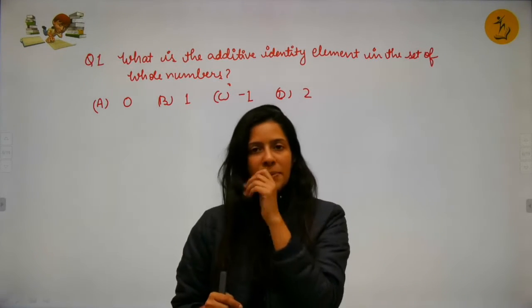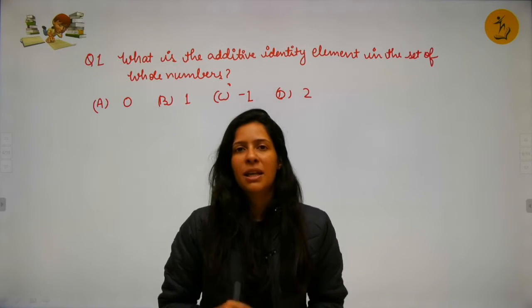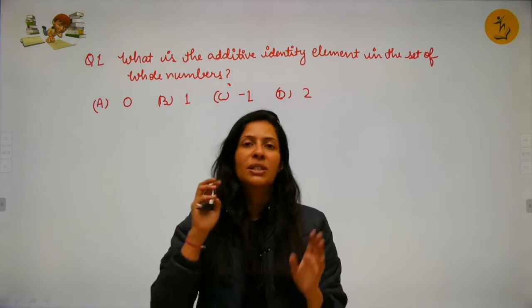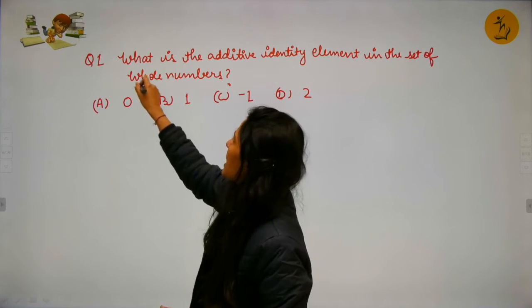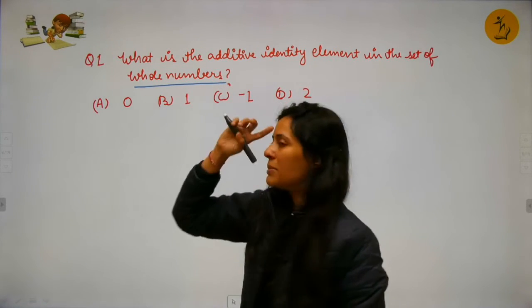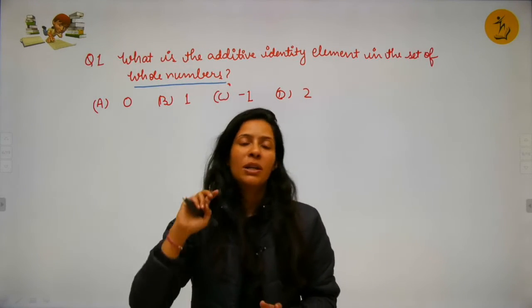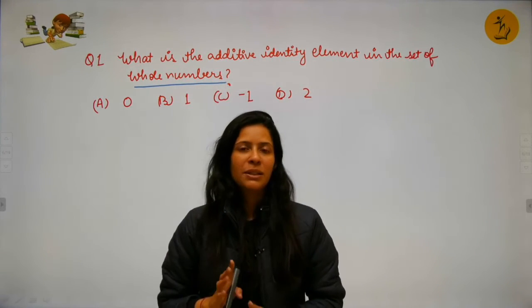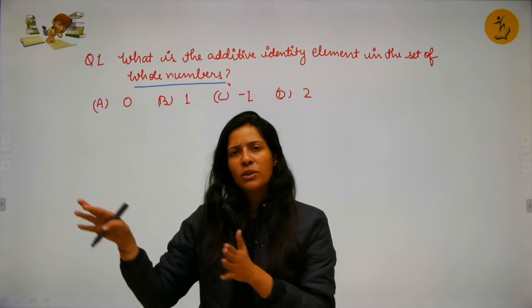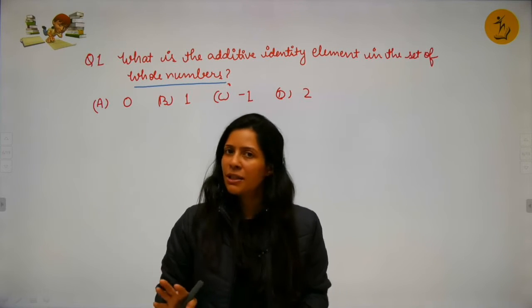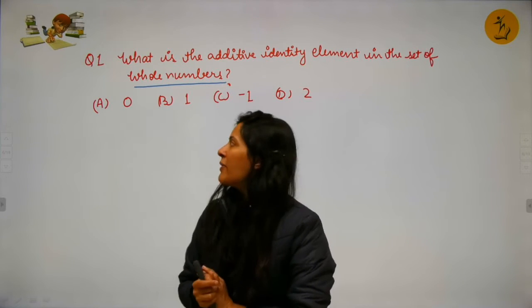Don't forget the question is asking about whole numbers, which start from zero. Now, what is the additive identity? If a number is given, what number should I add to it so that its identity is retained — meaning its numerical value remains the same? That number is known as the additive identity.